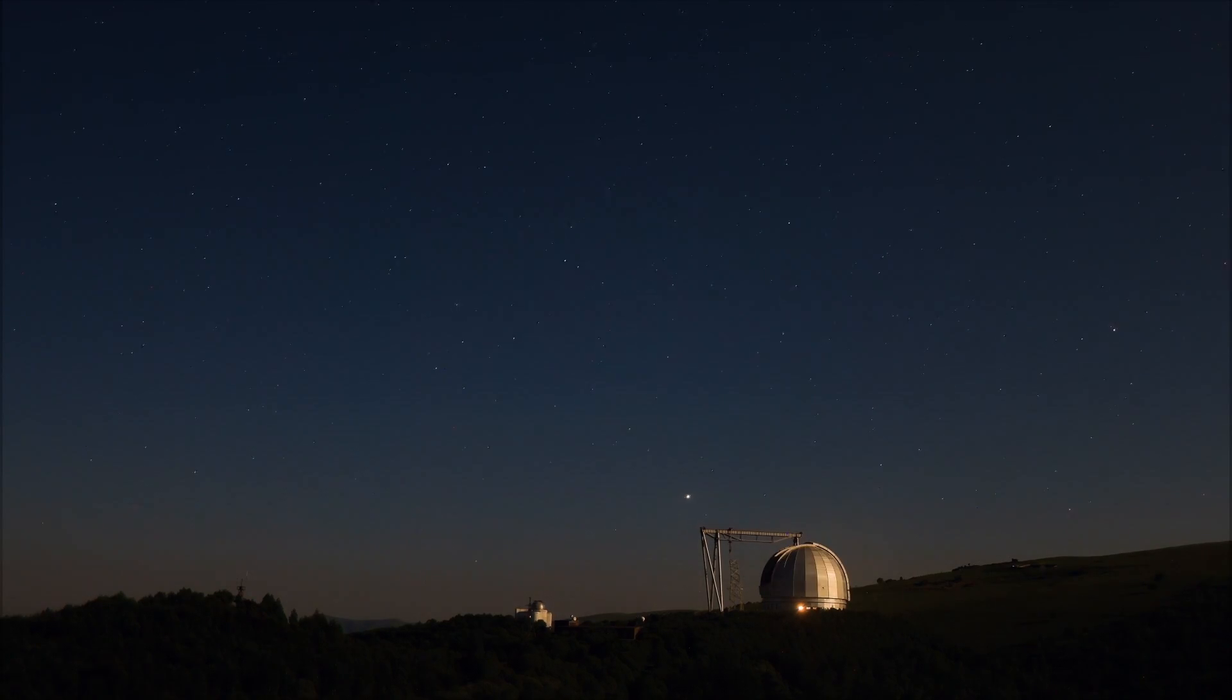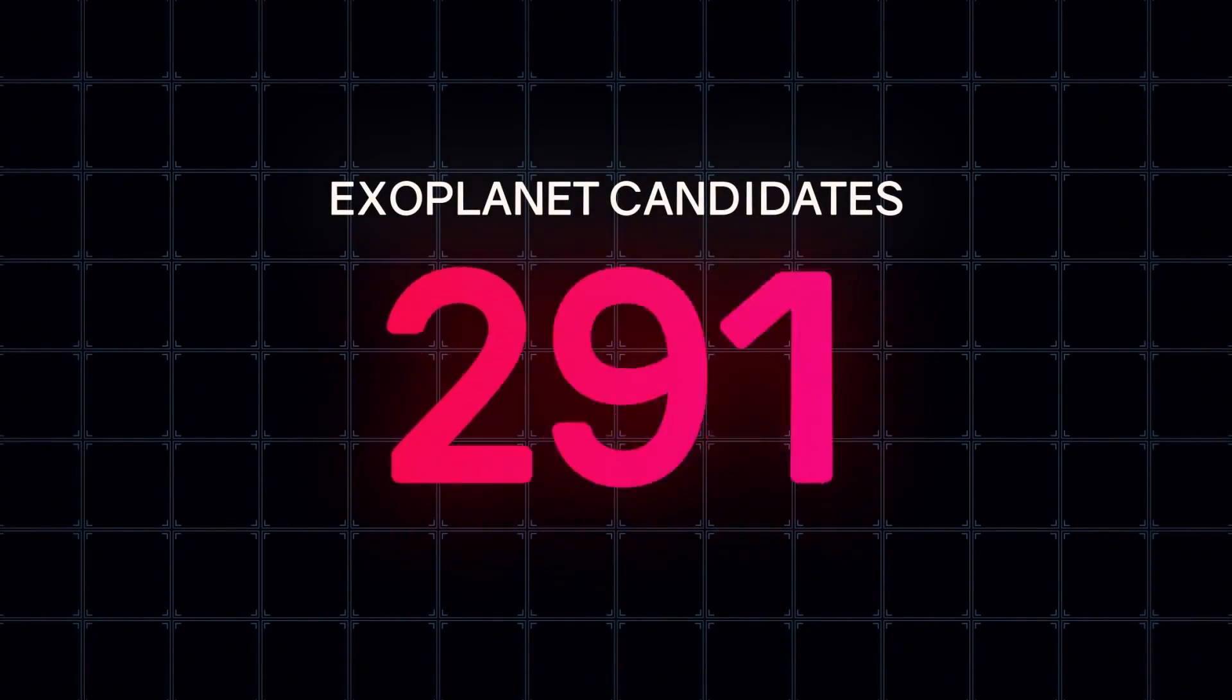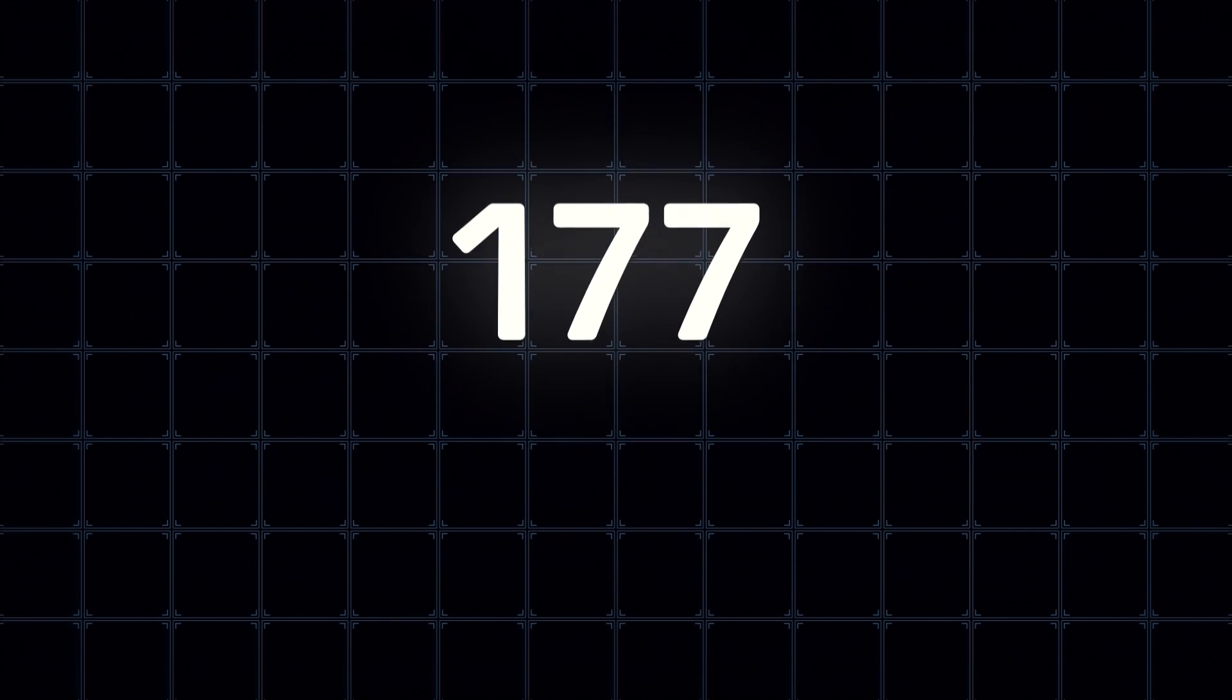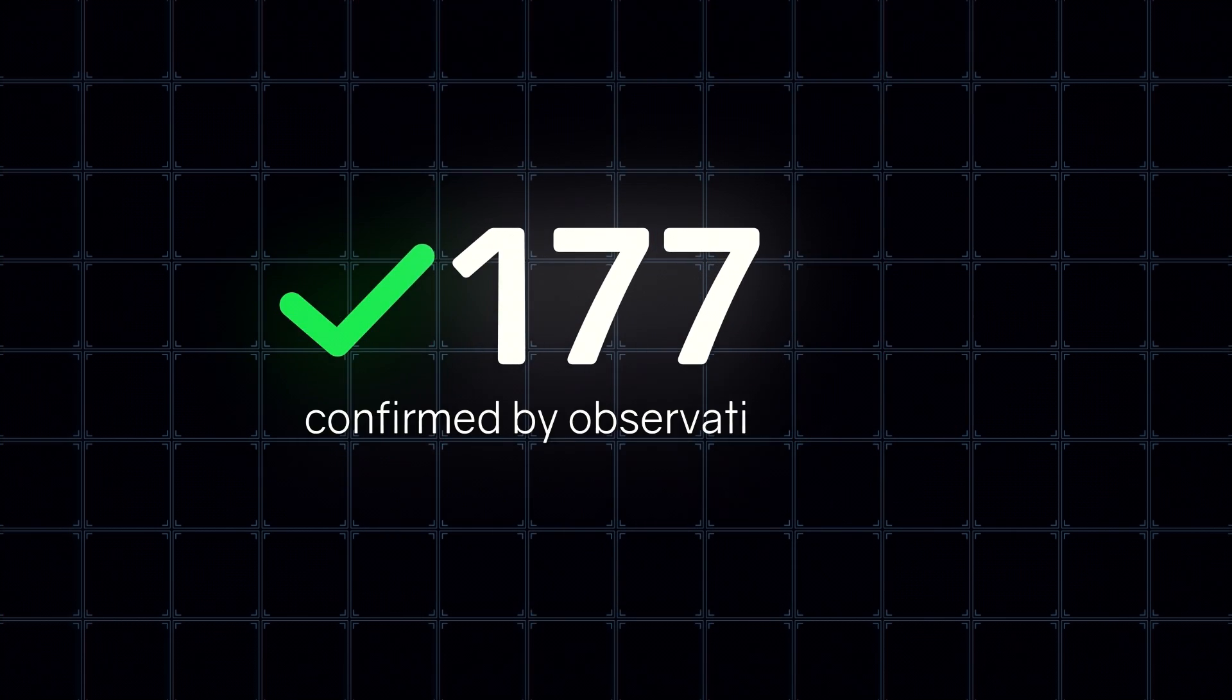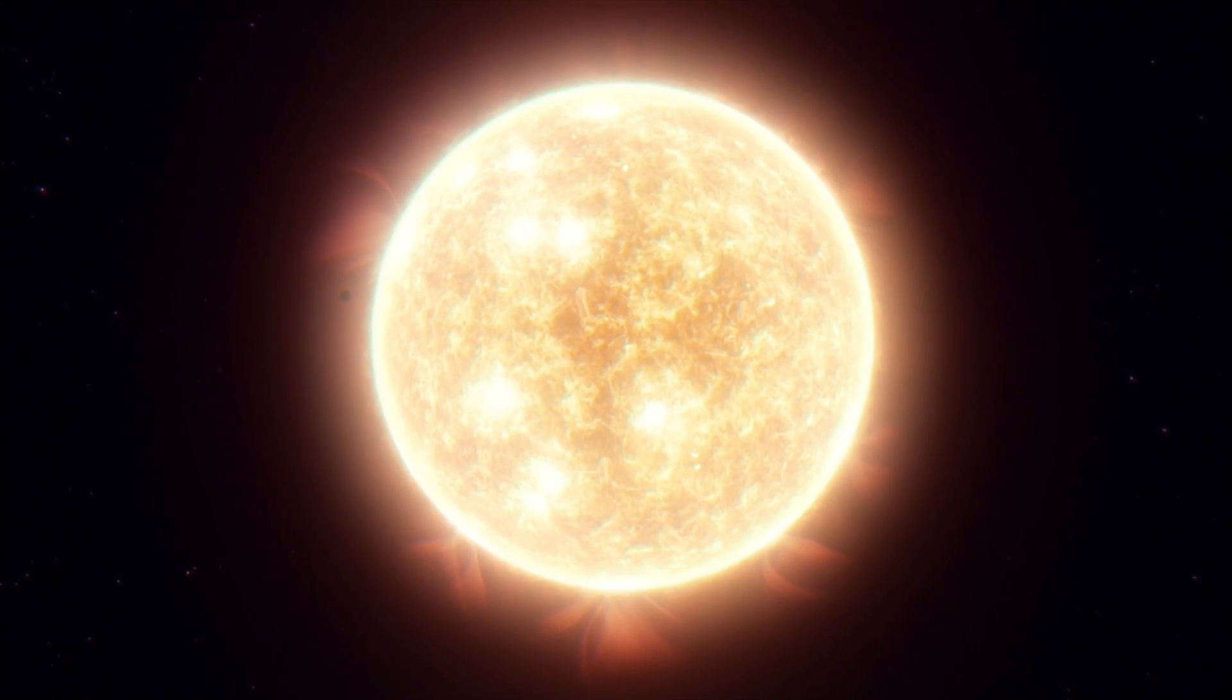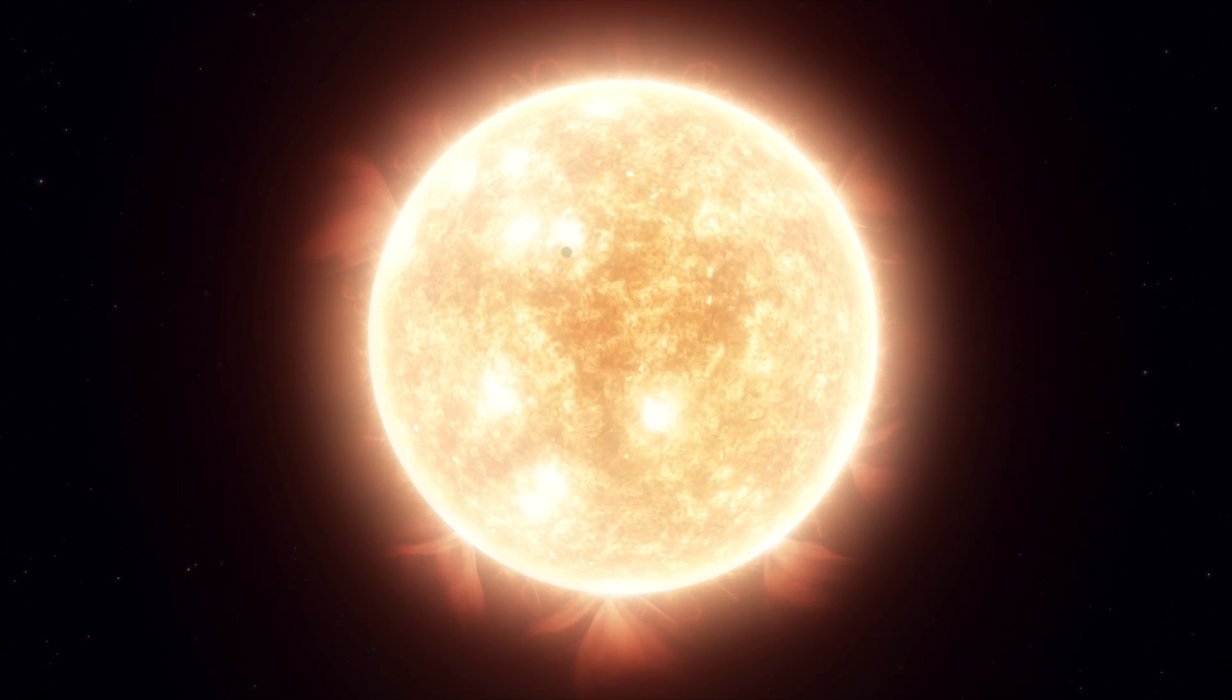On January 20, 2022, astronomers from the TESS space telescope team summed up the interim results for the first three years of its work. The number of found exoplanet candidates amounted to 5,210, of which 177 have already been confirmed by observational data from ground-based telescopes. A candidate for an exoplanet is an object that has twice been observed transiting the disk of a star.